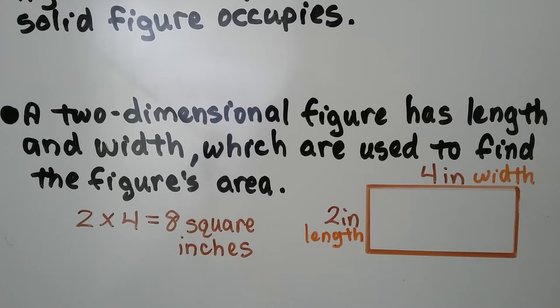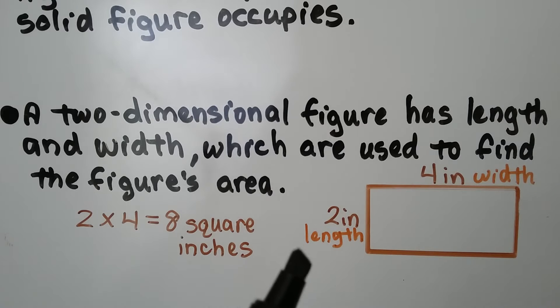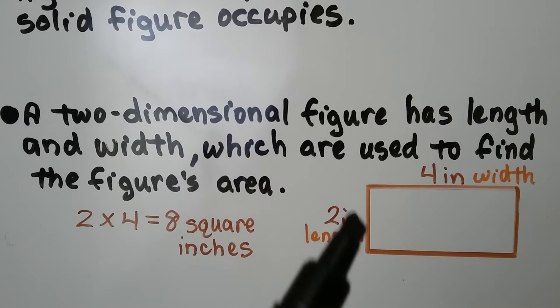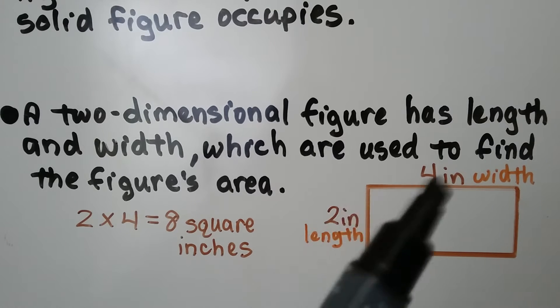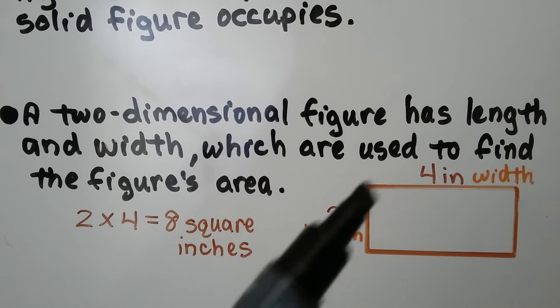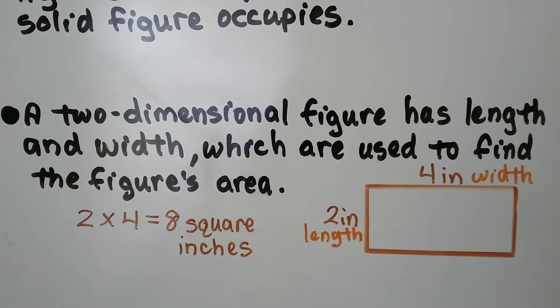A two-dimensional figure has length and width, which are used to find the figure's area. So we've learned this — if the length is two inches and the width is four inches, it's eight square inches.